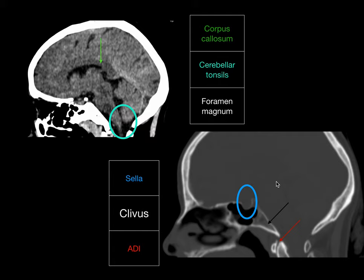Sagittal image reconstruction is very important nowadays with the advent of MDCTs. Sagittal and coronal planes are a must. You can clearly see the corpus callosum — look for any thinning, as pericallosal lipomas are usually missed on axial planes.